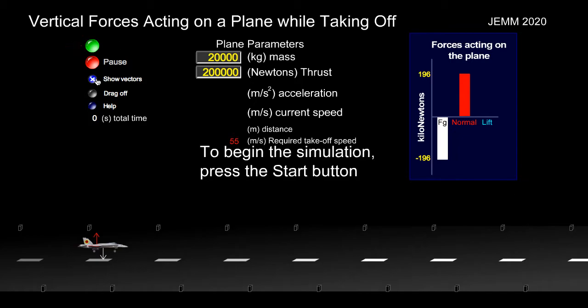And so currently, as the plane sits there and hasn't started moving yet, we only have two forces acting on the plane: gravity and normal force. Notice, looking at this graphic here, the forces are equal. Forces are equal because the plane is not in motion, it's not accelerating, and when something doesn't accelerate, the forces are balanced, or equal.